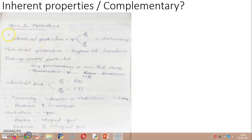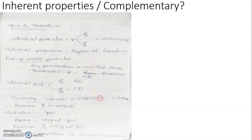In the case of identical particles — applicable in quantum mechanical particles — the wave function can have two different behaviors depending on whether it undergoes a negation under the particle exchange operation. If it undergoes a negation, the wave function is referred to as an anti-symmetric wave function. If it does not undergo a negation upon particle exchange, it is referred to as a symmetric wave function.